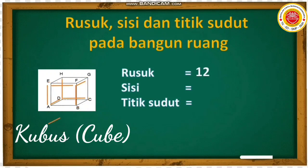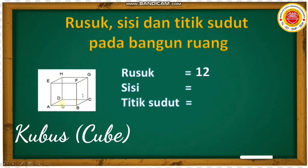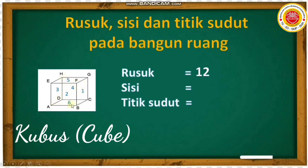Sekarang kita akan menentukan ada berapa sisi dari bangun ruang kubus. Mana sih yang dinamakan sisi? Sisi itu memiliki arti bidang datar pada bangun ruang. Jadi yang ada di samping-samping, depan, belakang, atas, dan bawahnya itu bidang datarnya disebut sisi. Sekarang kita hitung, sisi dari kubus ada berapa ya? Satu, dua, tiga, empat, lima, dan enam. Jadi jumlah sisi pada bangun ruang kubus ada enam sisi, yaitu dua samping, depan, belakang, atas, dan bawah.